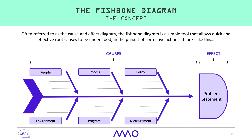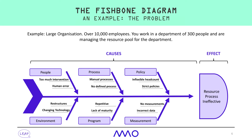These six themes can be used in many instances. For our example, the 'resource process is ineffective' is the effect, and against each of the six themes we list the associated causes. For example, under 'people' there's too much intervention and a lot of human error resulting from the use of Excel spreadsheets. Under 'policy', there may be strict policies from human resources outside your control that are also impacting the process.